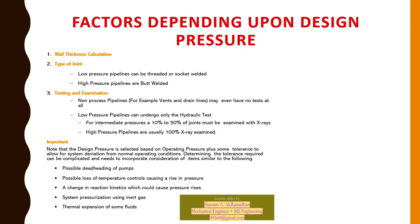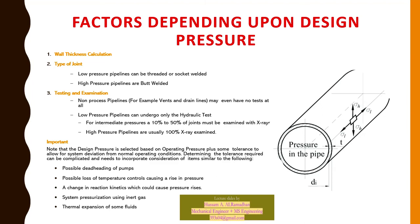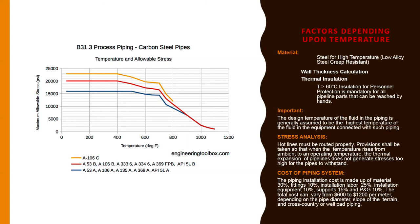Factors depending upon design pressure affect wall thickness calculation, type of joint, testing, and examination. Design pressure is selected based on operating pressure plus some tolerance to allow for system deviation from normal conditions. Considerations include: possible failure of control valves, possible loss of temperature control causing rising pressure, changes in reaction kinetics that could cause pressure rise, system pressurization using inert gas, and thermal expansion of fluids.